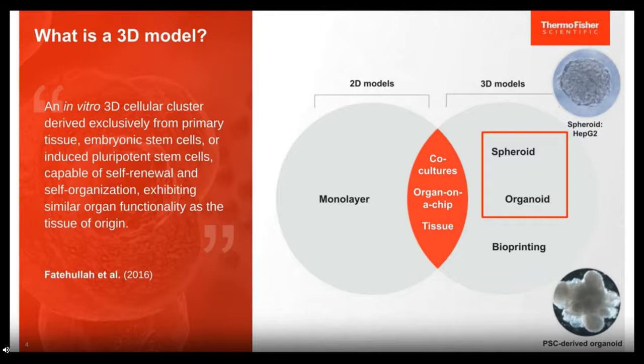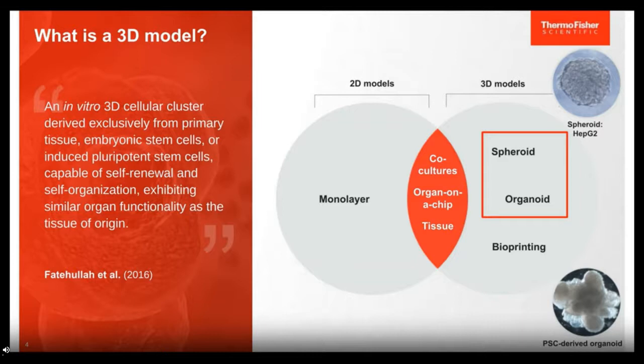Spheroids and organoids terminology can get a little confusing, as these terms are used interchangeably quite a bit. Spheroids are cellular clusters derived from an immortalized or primary cell source, which can grow and proliferate, exhibit some physiological relevance, but do not organize or differentiate into a new cell type — so what you start with will be the same cells you end up with. Organoids, on the other hand, are derived from a stem cell source. They can grow and proliferate, but they will differentiate or organize into a new cell type or multiple cell types at the end of the protocol.